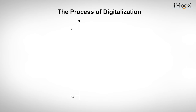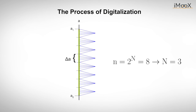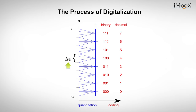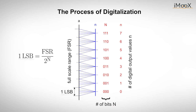First, let's look at a simple example of how digitalization works. We take an analog signal that has an infinite amount of intermediate values and map it with only eight different digital values. These eight values give us a resolution of 3-bit. The resolution defines the smallest change in the input value that the converter can still distinguish. This smallest change is called the least significant bit, or LSB, defined as the full-scale analog input range divided by 2 to the power of the number of bits.